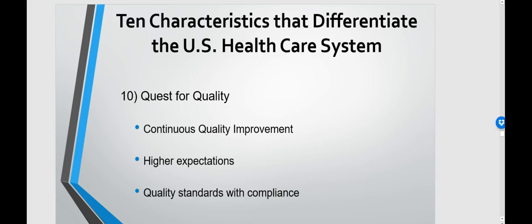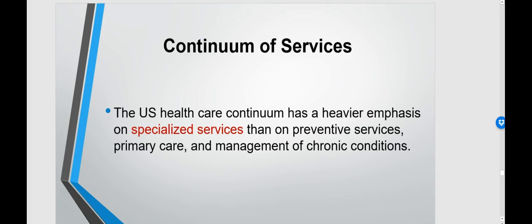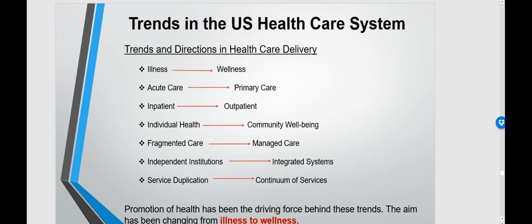That covers the 10 characteristics that differentiate the US healthcare system. The page 'Info from the Chapter' found in this week's module covers that topic very briefly by just listing them. Now jumping to the trends in the US healthcare system — looking at trends and directions in healthcare delivery and the shifts that are occurring.